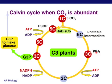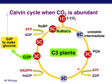This is what our Calvin cycle looks like normally. It's going to turn three times so that we can make one molecule of G3P, which is three carbons big. Those three carbons come straight from carbon dioxide. The carbons are added to a five-carbon intermediate by the enzyme rubisco. It goes through a series of changes where we utilize ATP, then we reduce it and utilize NADPH, and then we build G3P. This is normal photosynthesis.